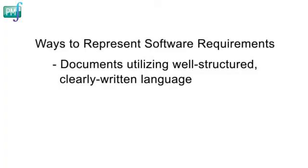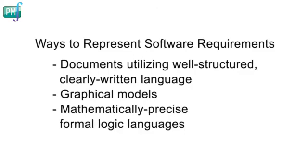Software requirements can be represented in a number of different ways. For instance, you can use documents that utilize well-structured, clearly written, natural language. You can use graphical models that illustrate system states, transformational processes, data relationships, logic flows, or object classes. Or you can represent the requirements with formal specifications that define features using mathematically precise, formal logic languages. Structured natural language accompanied by graphical models continues to be the most practical way for the majority of software projects to document their requirements.